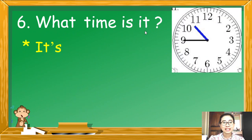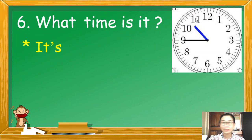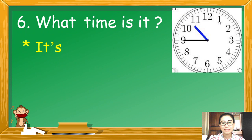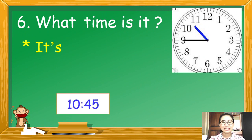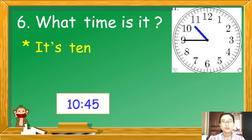What time is it? เวลาเท่าไหร่? ดูที่เข็มสั้นก่อน ชี้ระหว่างเลข 10 กับเลข 11 แต่ยังไม่ถึงเลข 11 ดังนั้นอยู่ที่ 10 นาฬิกา เข็มยาวชี้เลข 9 ถ้าไม่แน่ใจลองนับ: 5, 10, 15, 20, 25, 30, 35, 40, 45 นาทีนั่นเองค่ะ เขียนได้คือ 10.45.